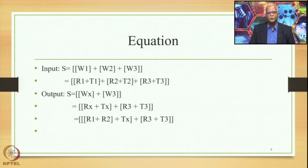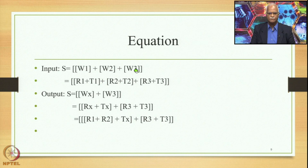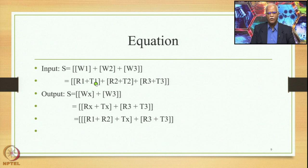Let us put this entire discussion in the form of an equation. The input is in the form of a sentence made up of three words: W1, W2, and W3. The plus sign indicates that W1, W2, and W3 are interrelated. These W's are in turn made up of R1 and T1, where R stands for the root and T stands for the termination. So R1 plus T1 is what W1 is made up of; R2 plus T2 is what W2 is made up of; and R3 plus T3 is what W3 is made up of.